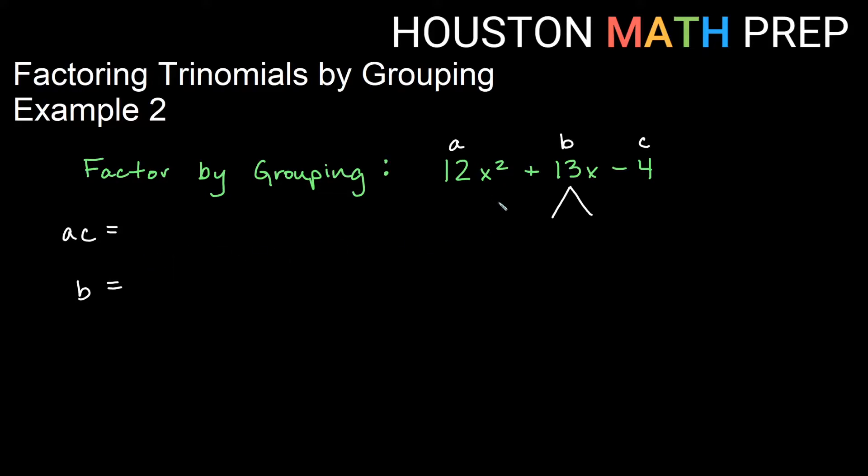In this one if I look at a times c it's 12 times negative 4 which would be negative 48. And we compare that to b which is a positive 13. And we always say what two numbers will multiply to get a times c with the same two numbers adding to get b. So we need two numbers that multiply to get negative 48 and they add to get 13.